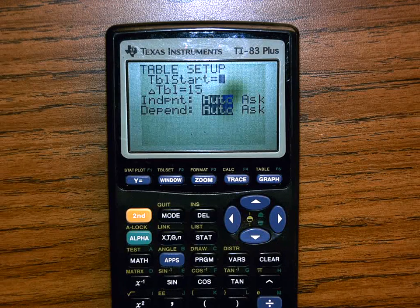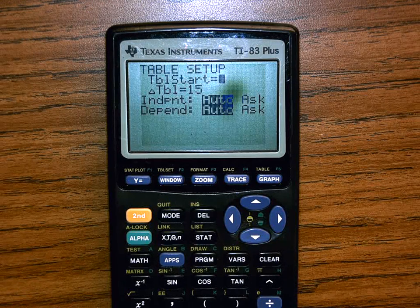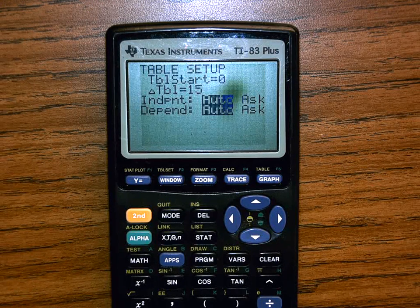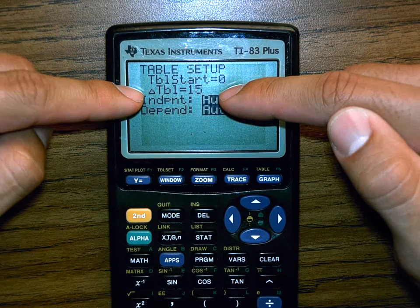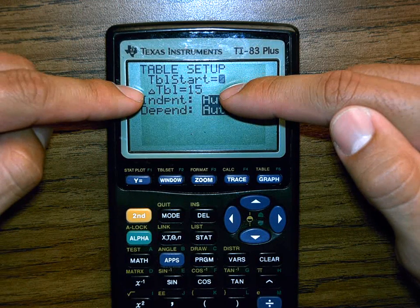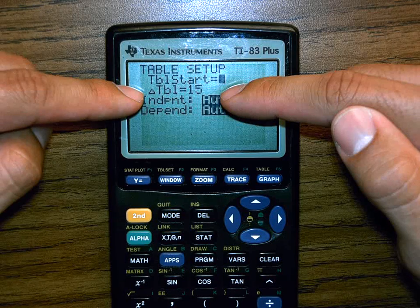About 15. Sometimes 30, sometimes 15. So let's just do every 15 degrees. That's what this means. What's the change of your table? What do you want your table to go up by every single time? I want it to go up by 15.